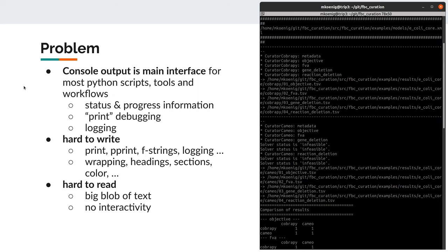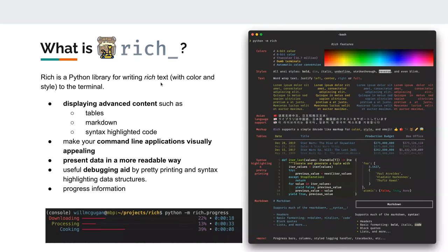So what is Rich? Rich is basically a Python library for writing rich text — text with color and style and some kind of interactivity. This allows us to display advanced content in the console such as tables, markdown, syntax highlighting, and so on. This makes your command line application visually appealing, but it also allows you to present your data and tool output in a much more readable way.